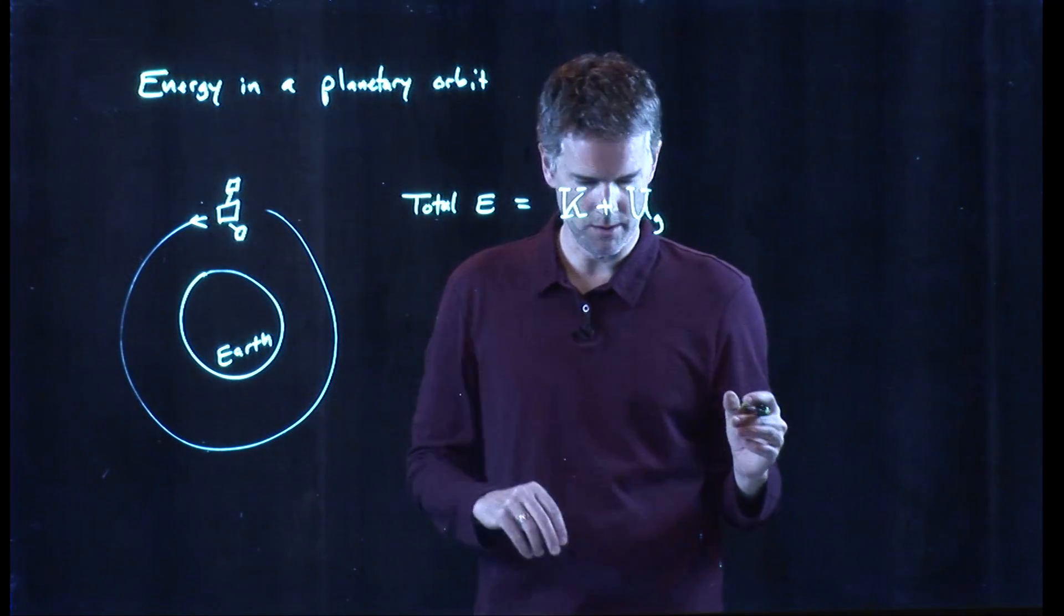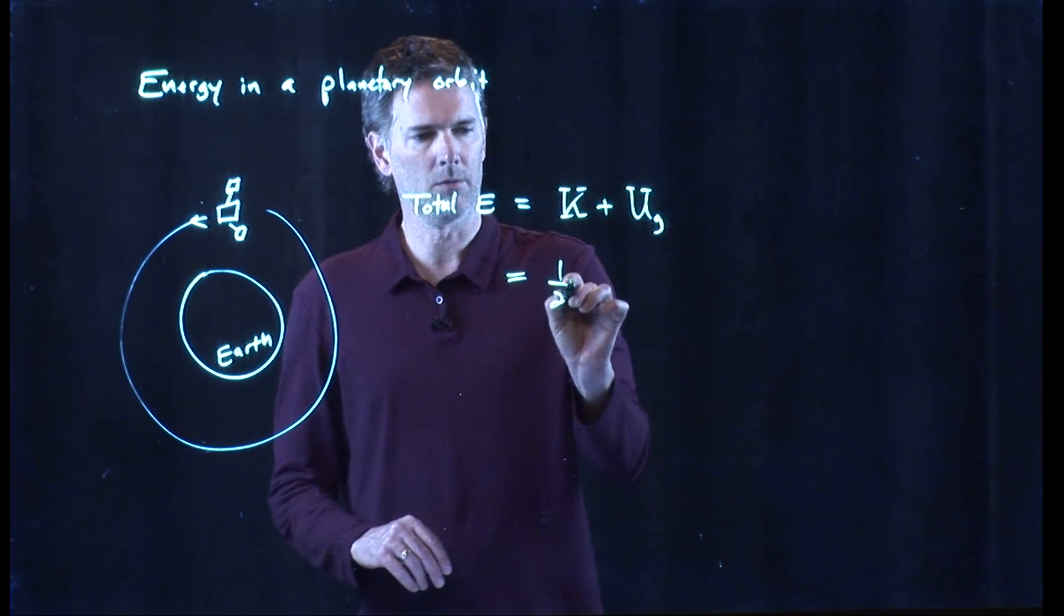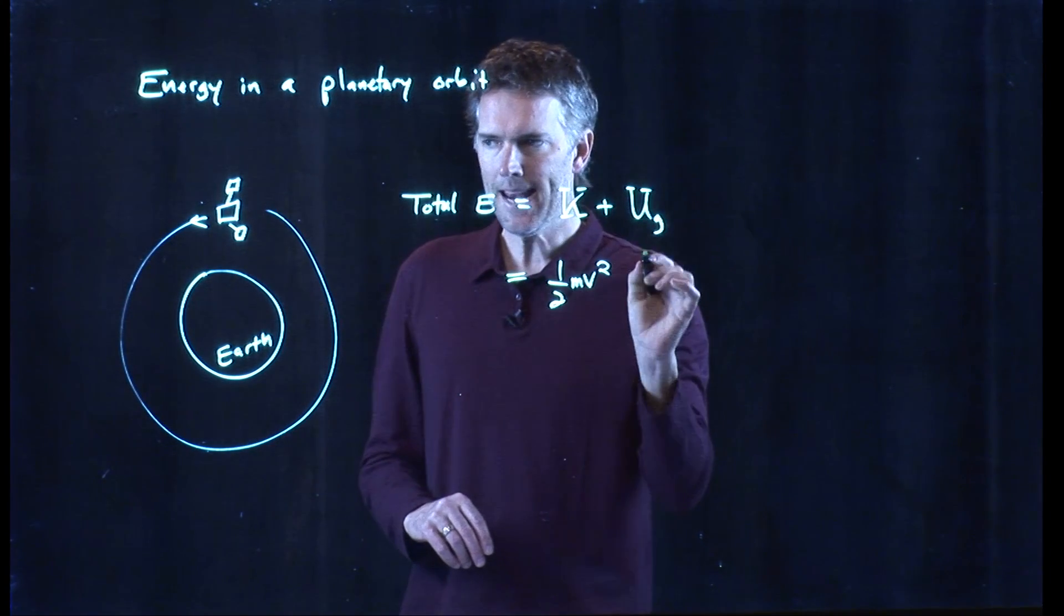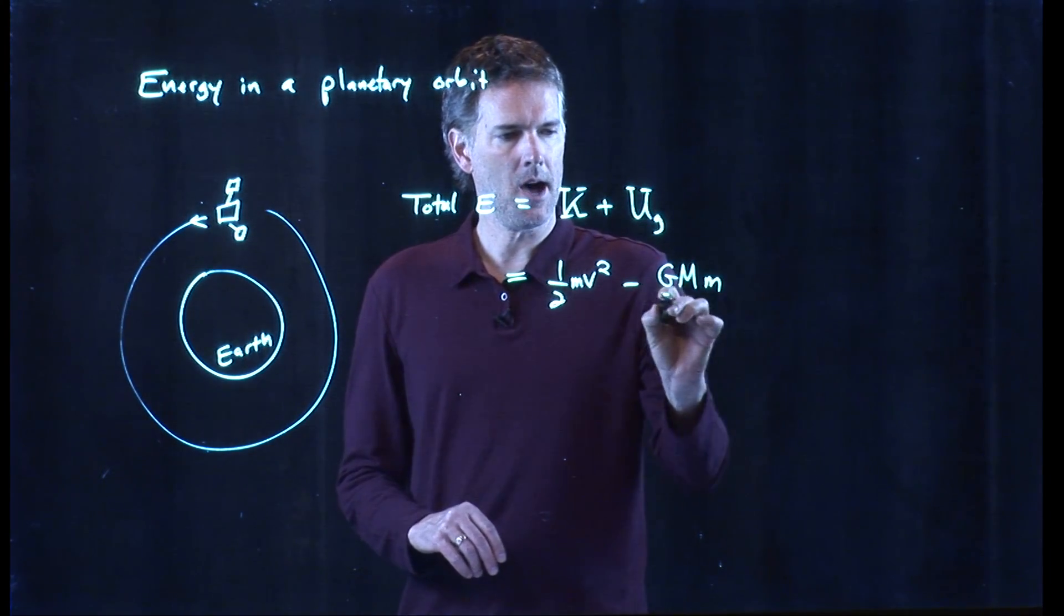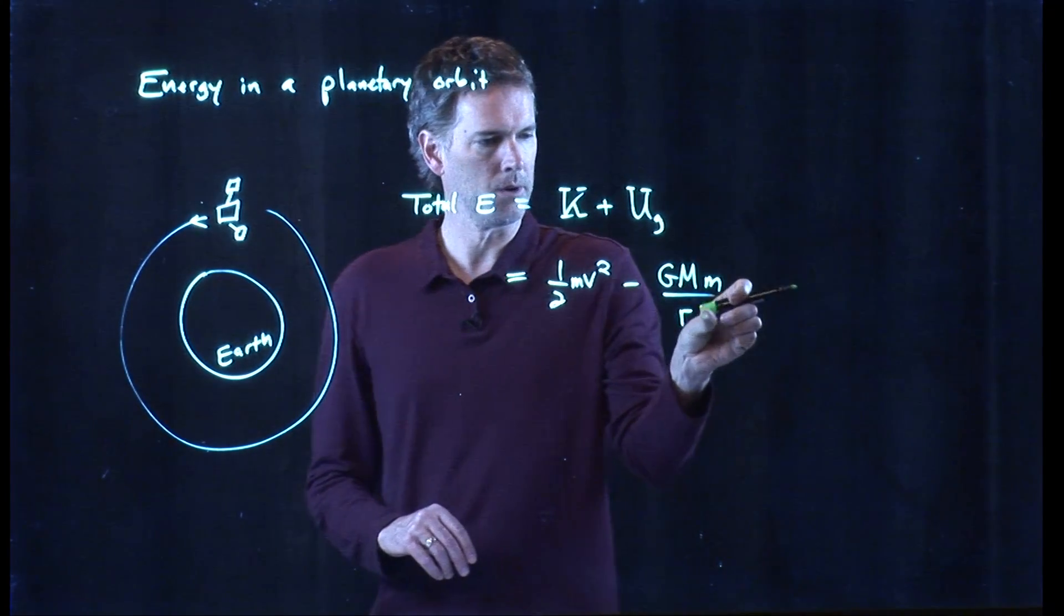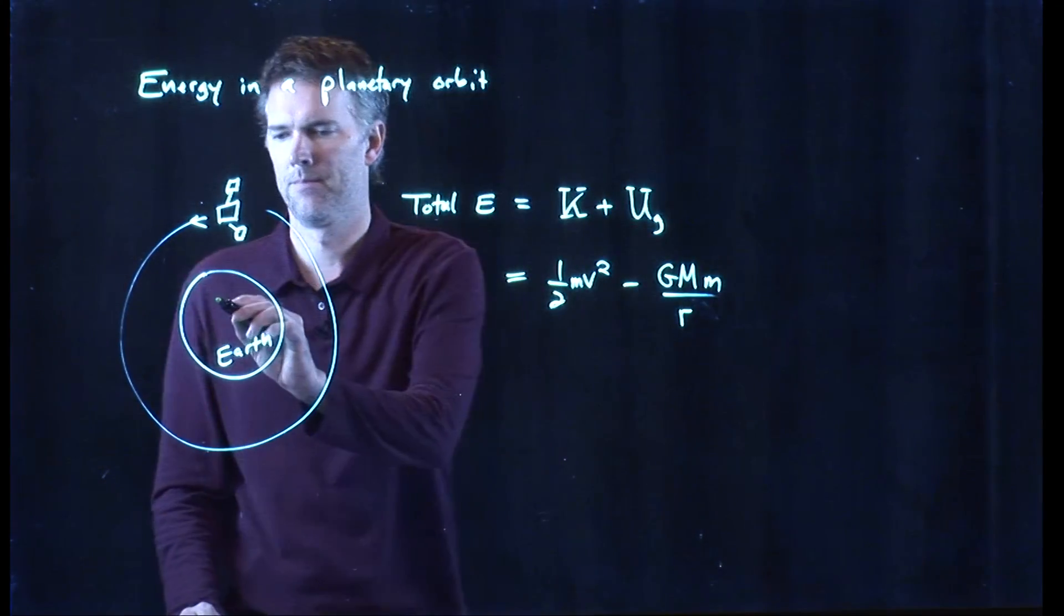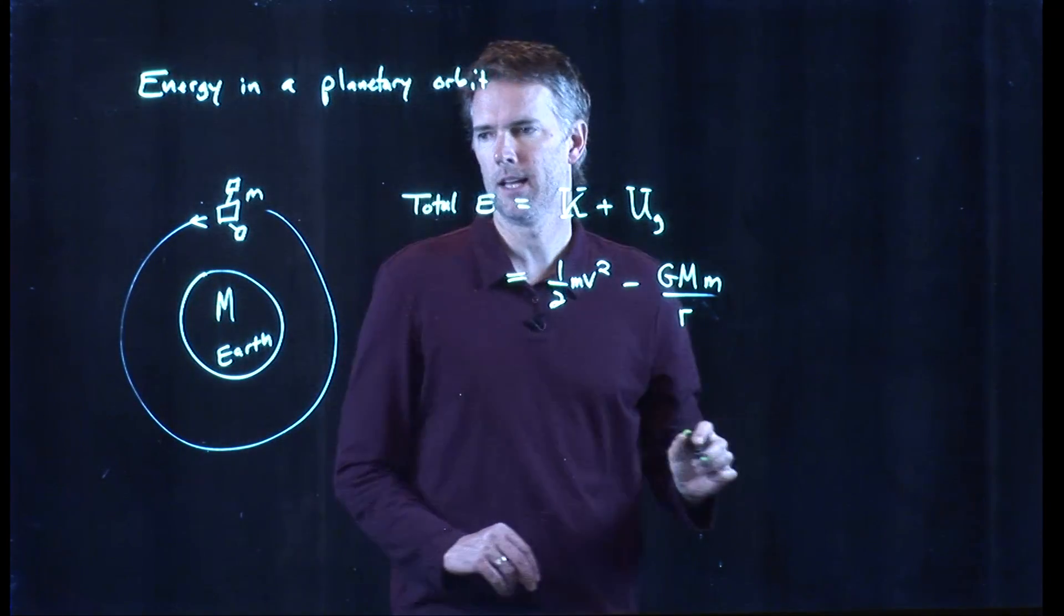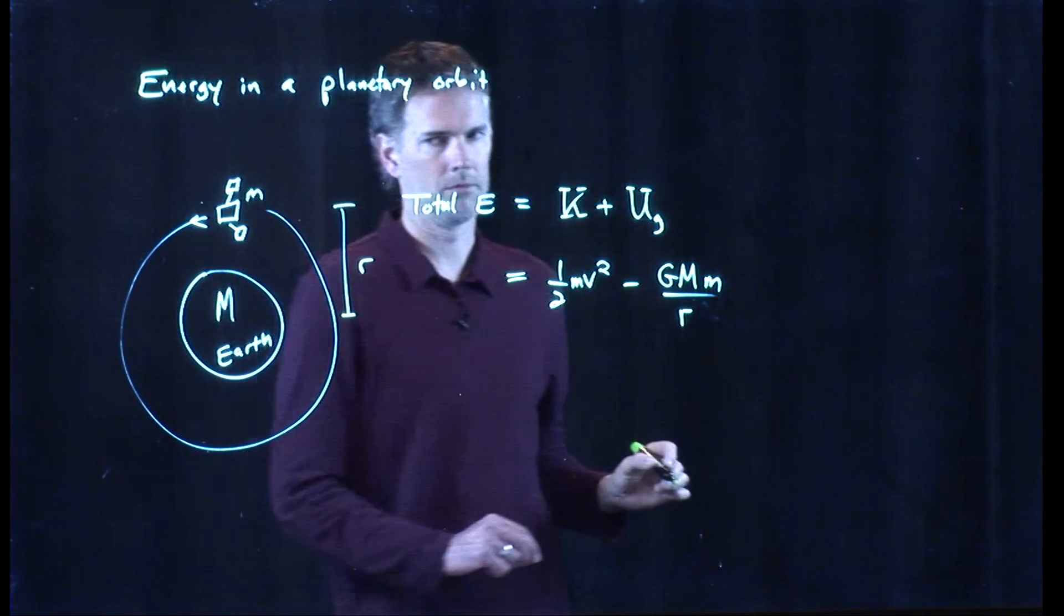Gravitational energy, potential energy. But we know exactly what kinetic energy is. Kinetic energy is one-half mv squared. And now we know what gravitational potential energy is. It's GMm over r. Not squared, just over r. Where the big M is the mass of the Earth, the little m is the mass of the satellite, and this distance there is, of course, r.